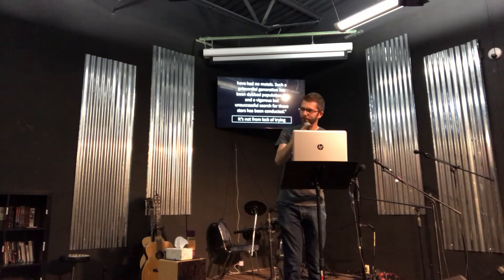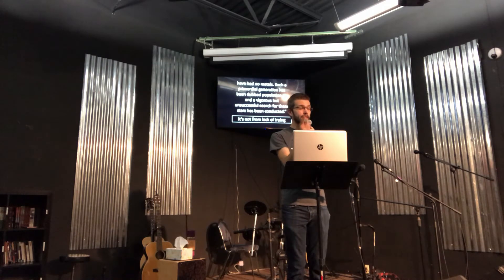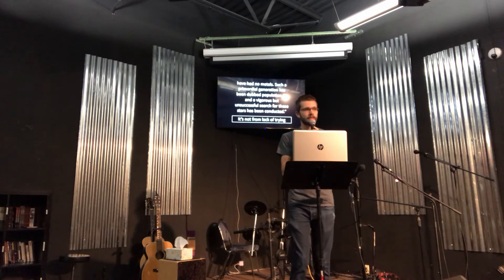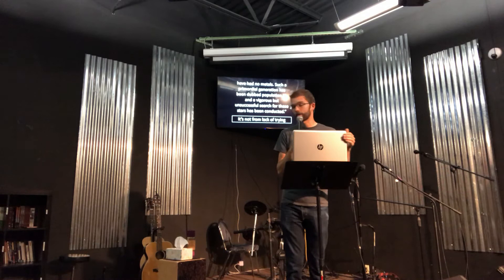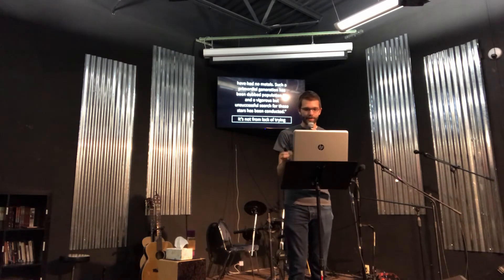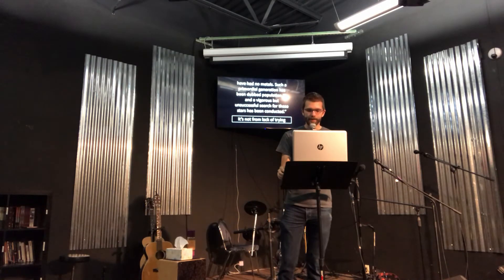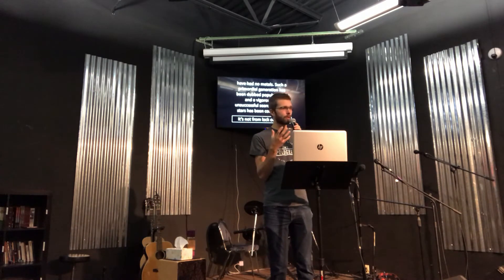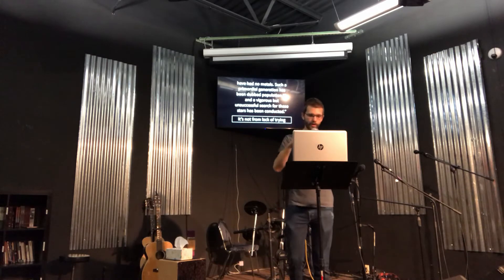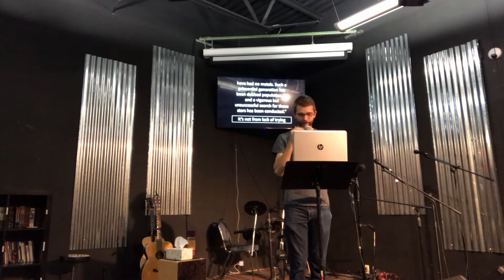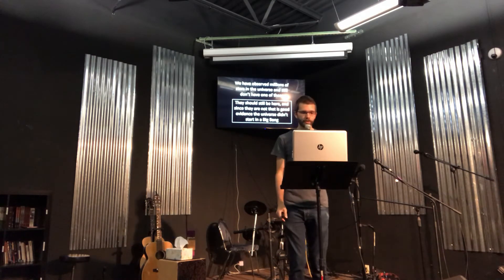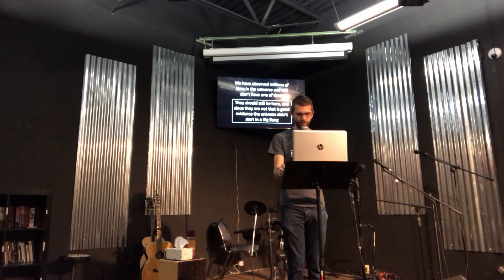Dr. Danny Faulkner, an astronomer, said: 'Since current cosmological theories demand that the universe begin with a composition entirely of hydrogen and helium, it is believed that the very first generation of stars should have no metals. Such a primordial generation has been dubbed population three, and a vigorous, unsuccessful search for these stars has been conducted.' You can't observe millions of stars and say you just haven't hit that 20% yet. After millions of observations, we need to rethink the theory. But they can't rethink it when the only alternative is creation. Even though these problems should cause them to abandon the Big Bang, instead they apply endless patches like the inflation theory to keep it alive. We've observed millions of stars in the universe, and we don't have one population three star — it's good evidence the universe didn't start in a Big Bang.